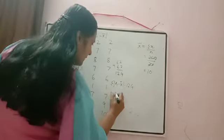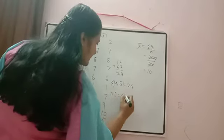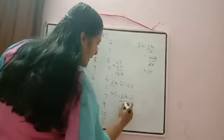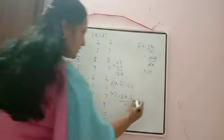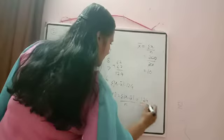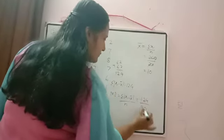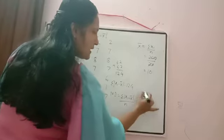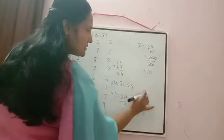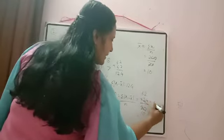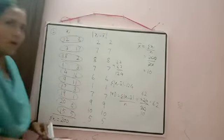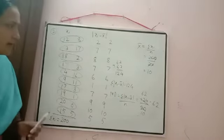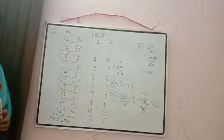Mean deviation = Σ|xᵢ − x̄| / n = 124 / 20. Cancel by 2: 62/10 = 6.2. So mean deviation is 6.2. I think it is clear how to calculate the mean deviation when observations are given.